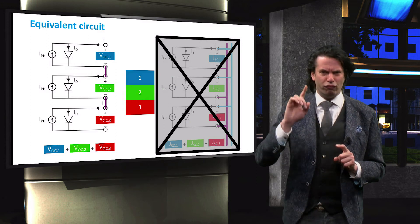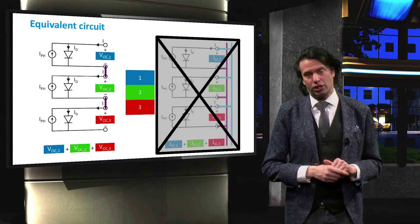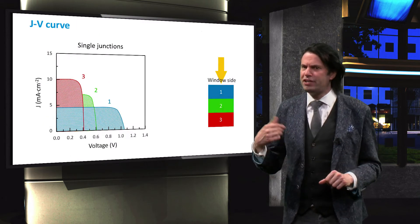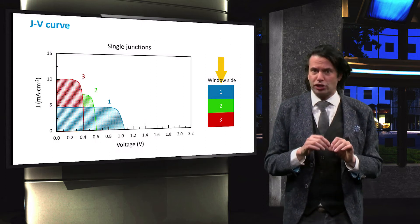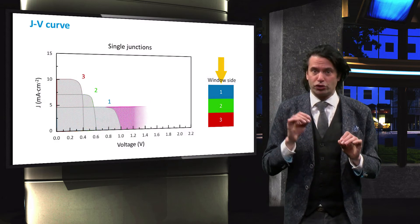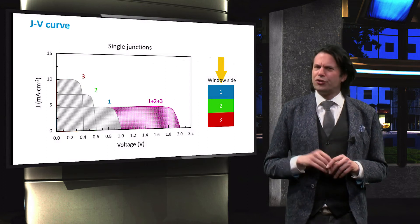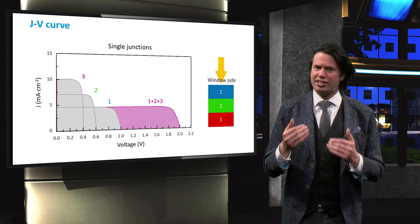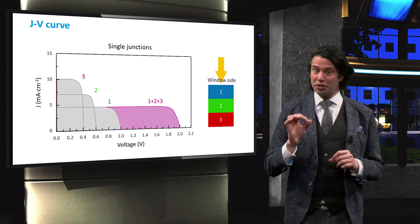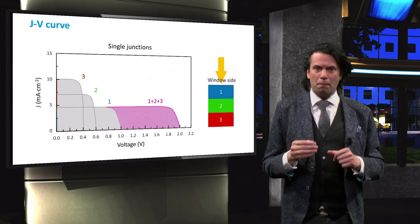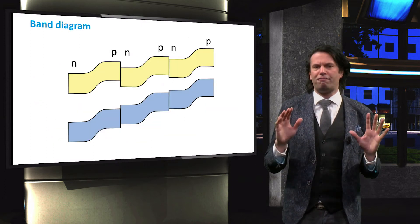This means that the voltages of the individual cells add up in the triple junction cell. Looking at the JV curve of the triple junction device, we can see that its open-circuit voltage is equal to the combined open-circuit voltages of the three junctions. Furthermore, the current density in a series connection is the same throughout the entire solar cell, which means that the current density of the triple junction is determined by the p-n junction generating the lowest current.